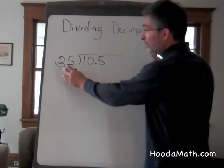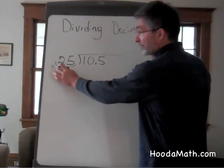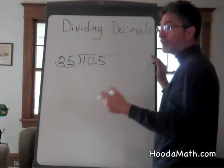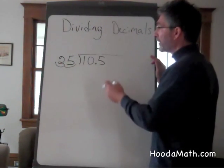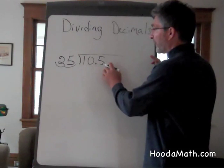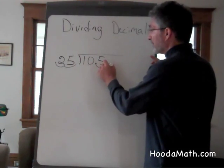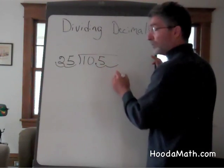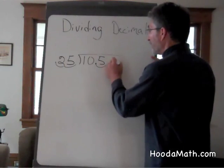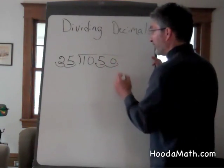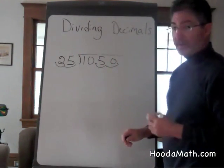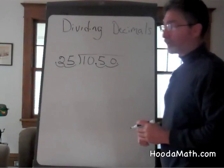When you do this to the divisor, it's necessary to do the same procedure to the dividend. 10 and 5 tenths — move the decimal two places to the right and it becomes 1,050. Now divide normally.